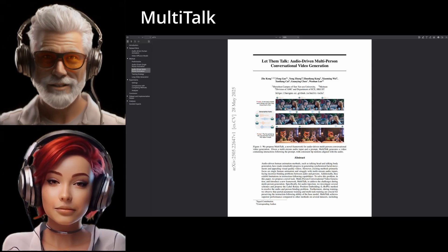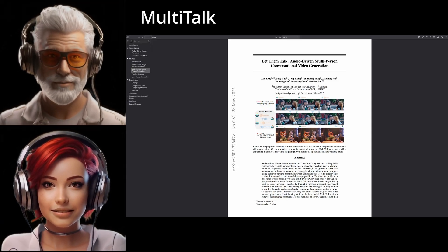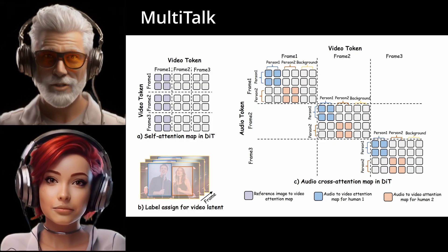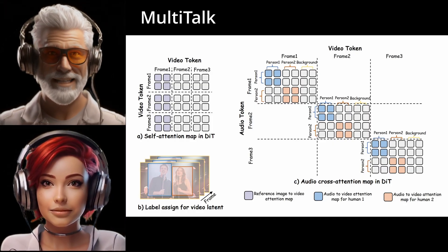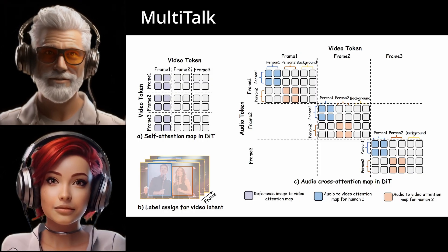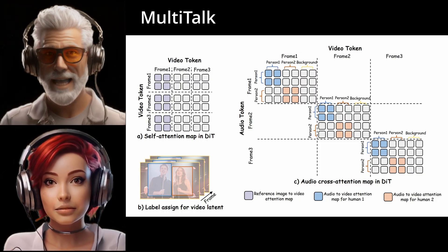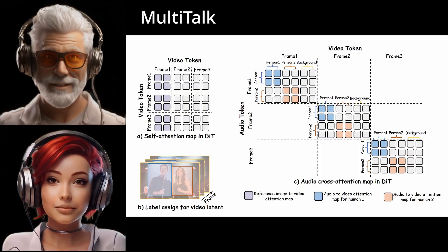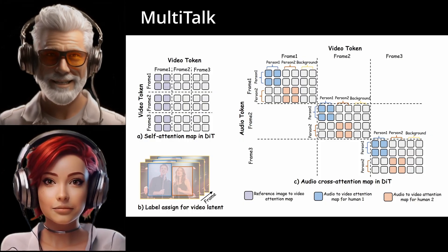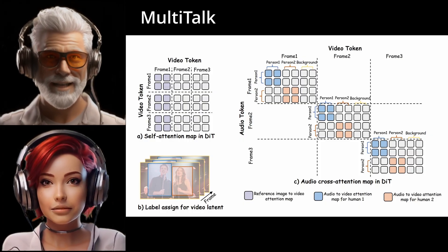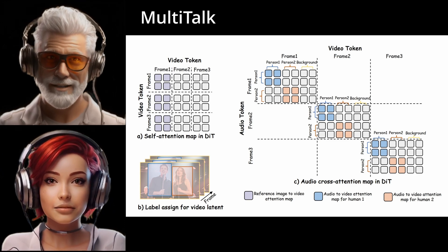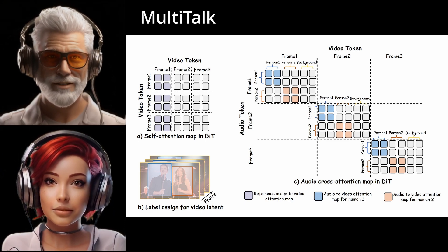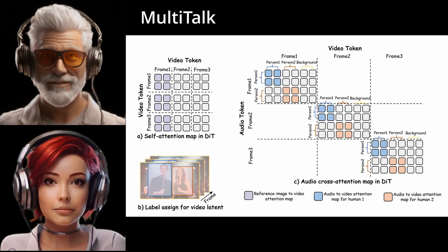That brings us to their main innovation: Label Rotary Position Embedding, or L-RoPE. You can think of it as a very smart digital conductor for the animation. It assigns these unique temporary labels to bits of the audio, and then it links those labels directly to the visual data of the person's face and body. This connection essentially tells the system that this specific sound belongs to that specific person on screen, and that allows it to trigger the right lip movements, the right expressions, for really good synchronization, even if the scene's busy.